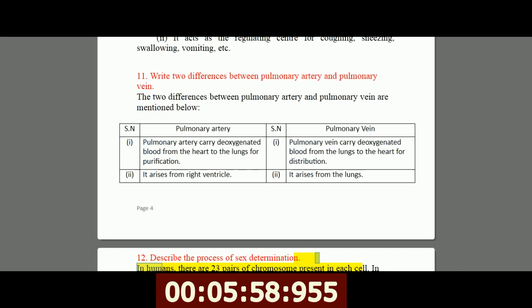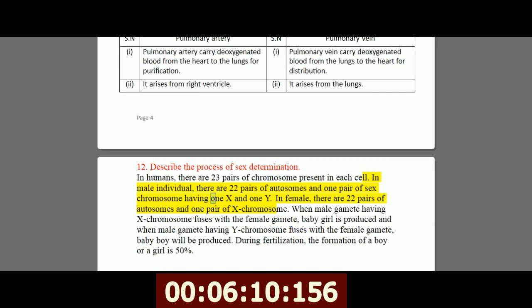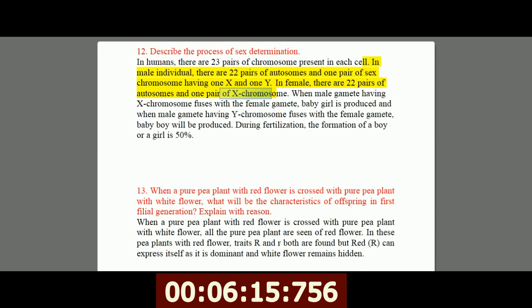12. Describe the process of sex determination. In humans, there are 23 pairs of chromosomes present in each cell. In male individual, there are 22 pairs of autosomes and one pair of sex chromosome having one X and one Y. In female, there are 22 pairs of autosomes and one pair of X chromosome. When male gamete having X chromosome fuses with the female gamete, baby girl is produced, and when male gamete having Y chromosome fuses with the female gamete, baby boy will be produced. During fertilization, the formation of a boy or a girl is 50%.